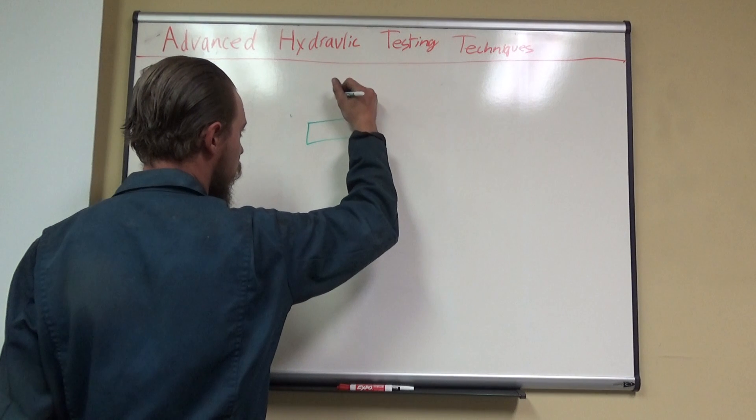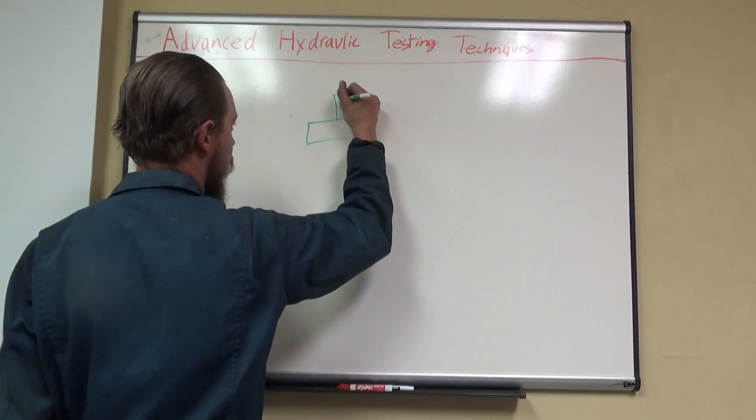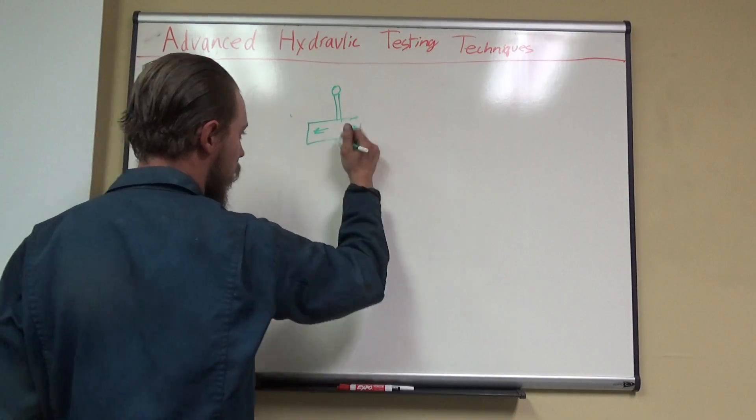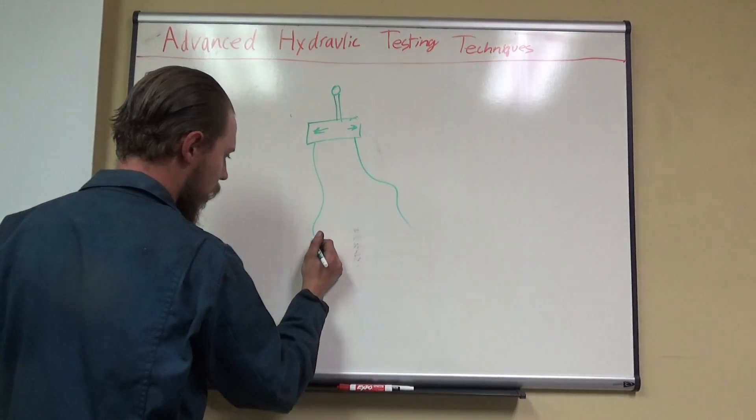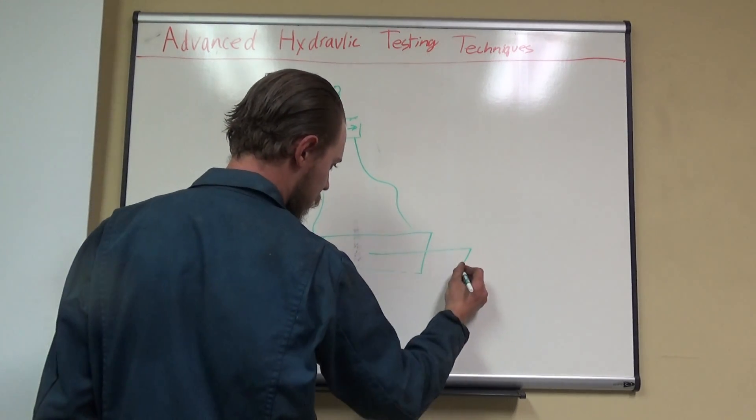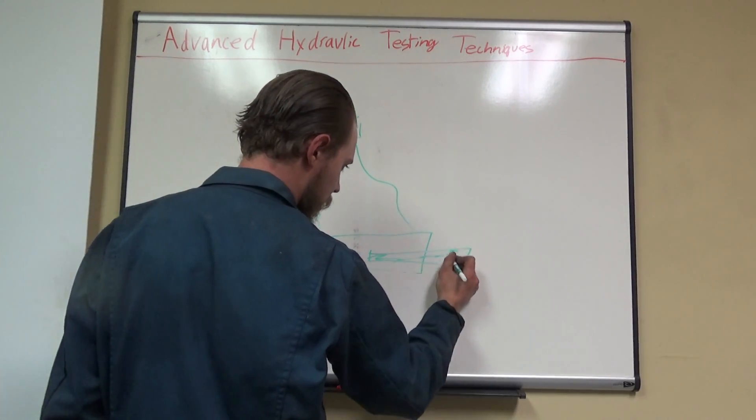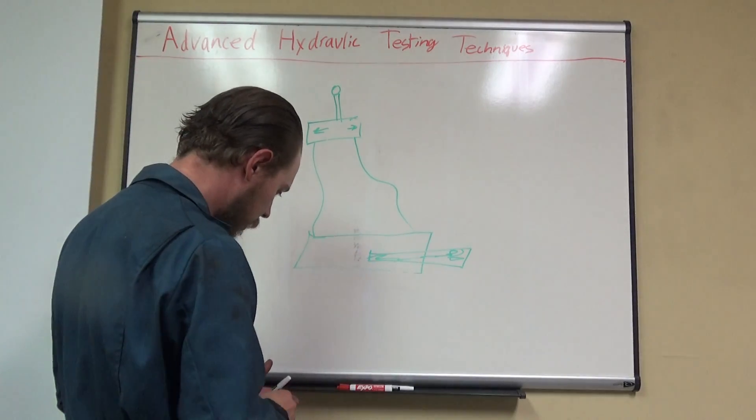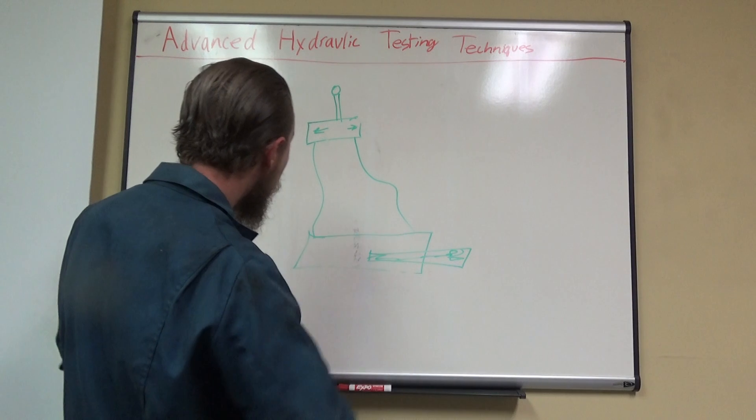That would be one use. Another would be at your control valve. So you've got your little lever here, so we've got a forward and a reverse, and we've got one line going there, one line going there, big old hydraulic cylinder.